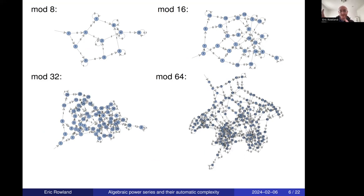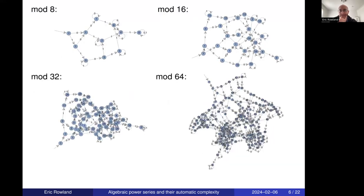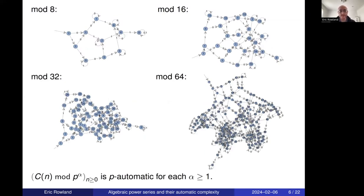These are alternative answers to the question: what is the nth Catalan number modulo 64? Automata and automatic sequences have many nice computable properties — you can determine whether a sequence is eventually periodic, or whether any residues are missing. For example, no Catalan number is congruent to 3 mod 4, and no Catalan number is congruent to 7 mod 8; these facts can be read off directly from the automata by checking that no state outputs 3 or 7. This works for any prime power: reducing the Catalan numbers modulo p^α gives a p-automatic sequence for every α ≥ 1.